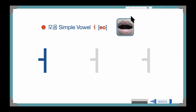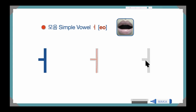This is 'o', 'o'. Please look at the picture and imitate the shape of your mouth: 'o', 'o'. Like an umbrella — umbrella — 'o', 'o', 'o'. Okay, and let's write: from left to right, top to bottom — 'o'. One more time: 'o'. Okay, quite simple, right?